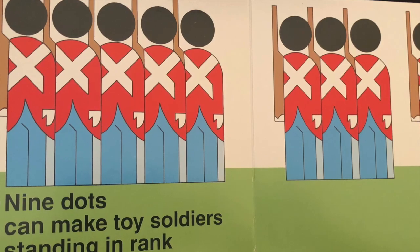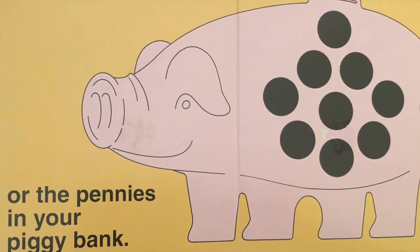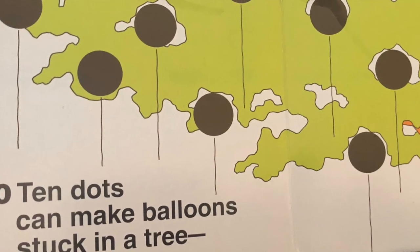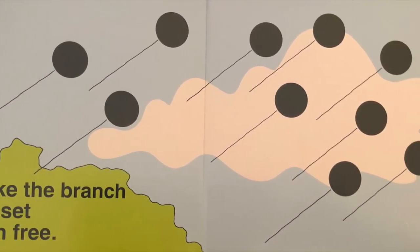Nine dots can make toy soldiers standing in rank or the pennies in your piggy bank. Ten dots can make balloons stuck in a tree. Shake the branch and set them free.